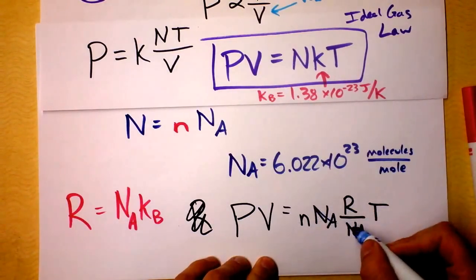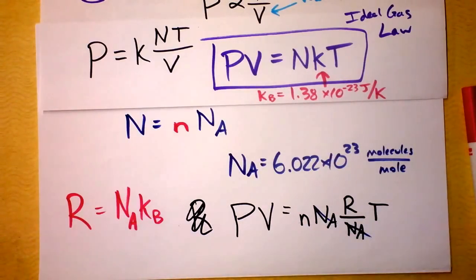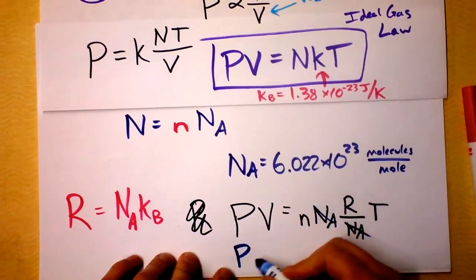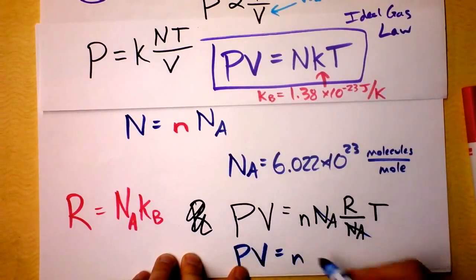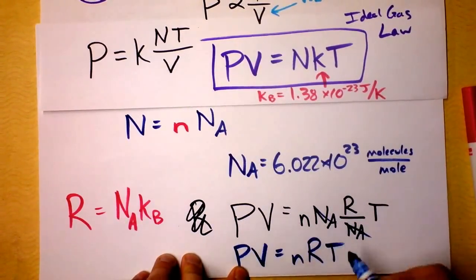And we'd say that PV, yeah, just as you remember from your chemistry class, PV is lowercase n, times capital R, times T.